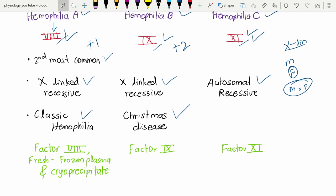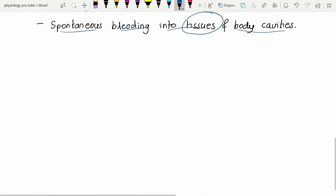If we give the deficient factors, we can definitely manage the disease. In hemophilia A, we give factor VIII; in hemophilia B, factor IX; and in hemophilia C, factor XI. We can also give fresh frozen plasma and cryoprecipitate because they also contain these factors.